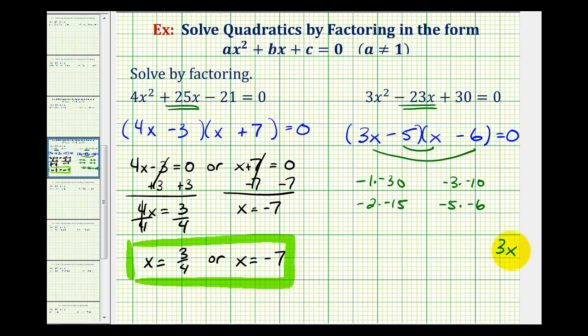So now we can go ahead and solve the equation. Since this product is equal to zero, either the first factor of 3x minus 5 must equal zero or the factor of x minus 6 must equal zero.